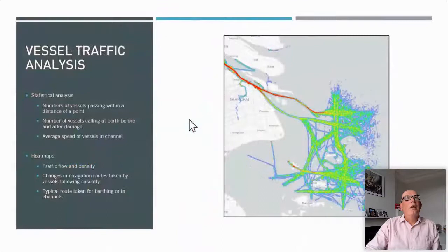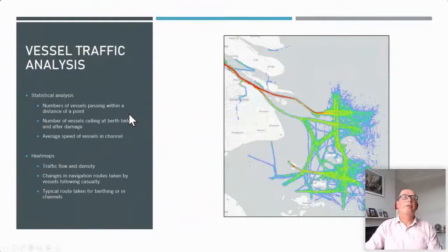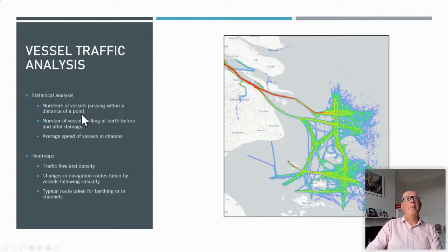Finally, looking at other uses of data for statistical analysis — there's a heat map. More and more, we're looking at comparing and contrasting the tracks of one vessel against another to show whether that vessel was acting and manoeuvring as expected. We can compare it with a number of vessels passing, the distances, and we can show heat maps of traffic flow and traffic densities. Lots of useful data and lots of points for discussion. Back to you, Joss.